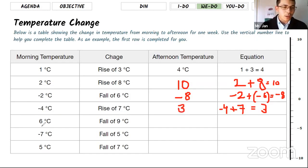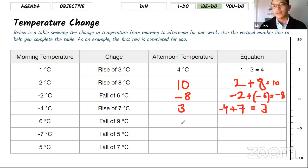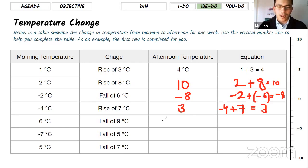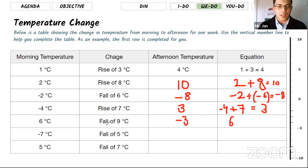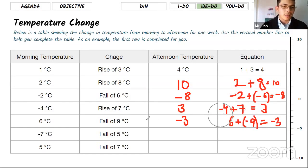For the next one, morning temperature was 6 Celsius and it went down by 9 Celsius. What do you think the afternoon temperature would be? It is negative 3. Morning was 6, and because it fell down it's a negative 9, so 6 plus negative 9 equals negative 3. All of you got the same answer — perfect!